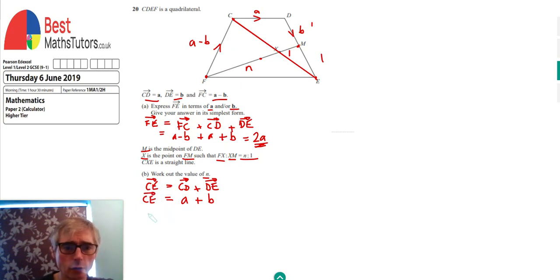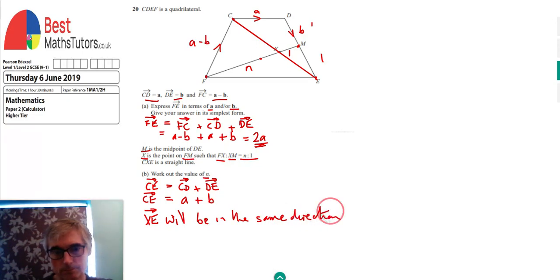We're now going to look at the part of that line which is XE. The reason for that is if CXE is a straight line, then XE will be in the same direction as CE.